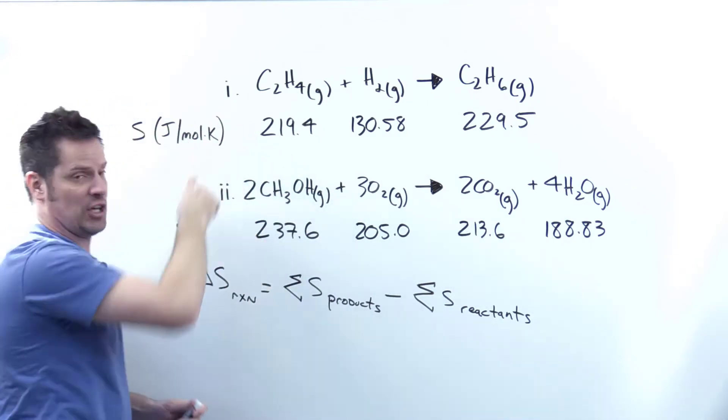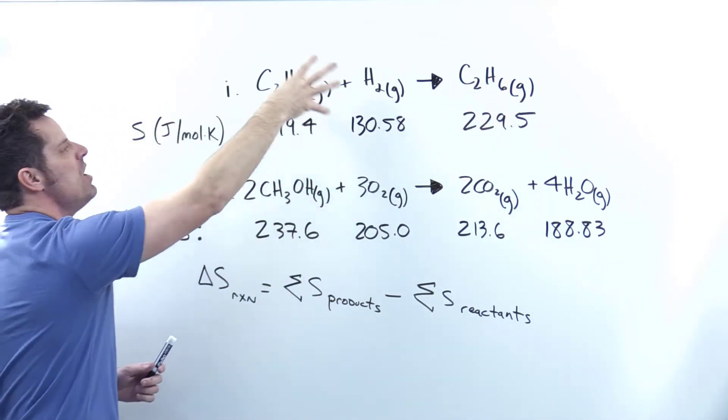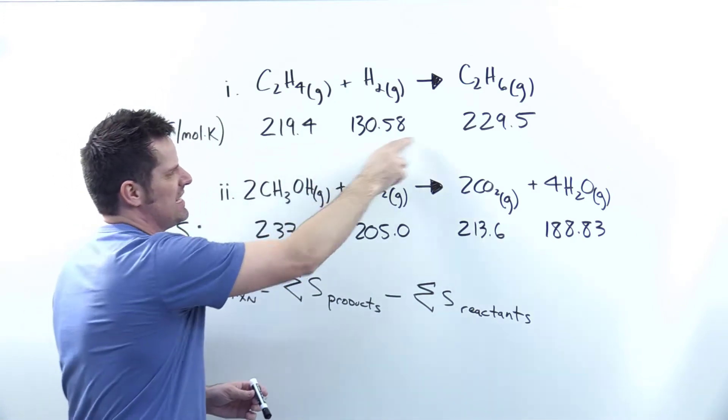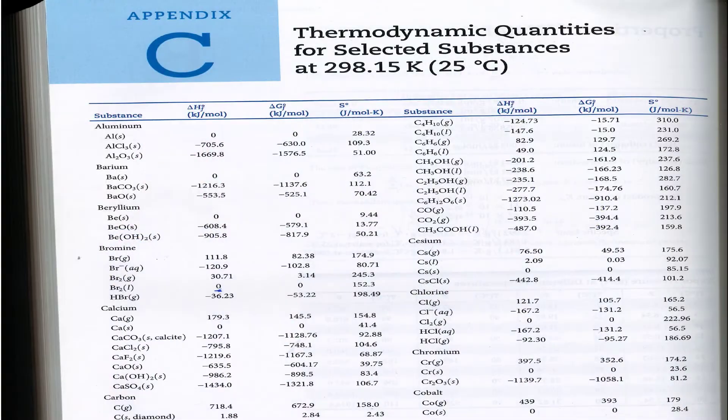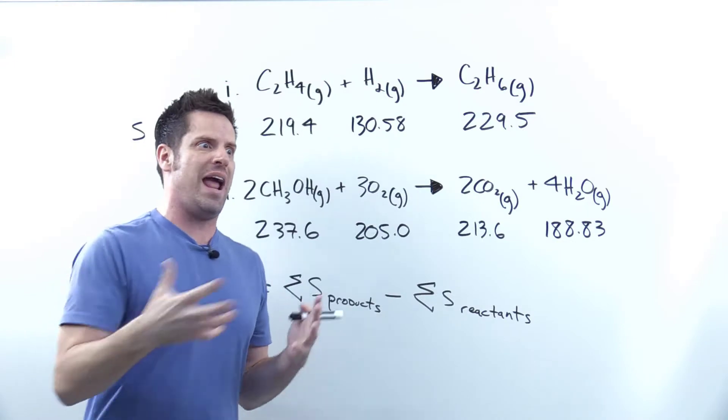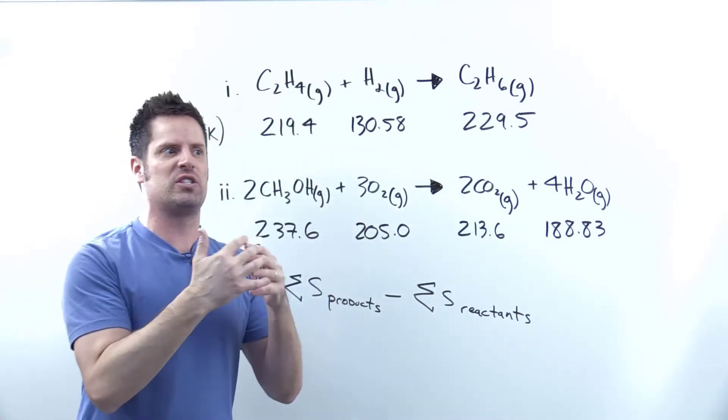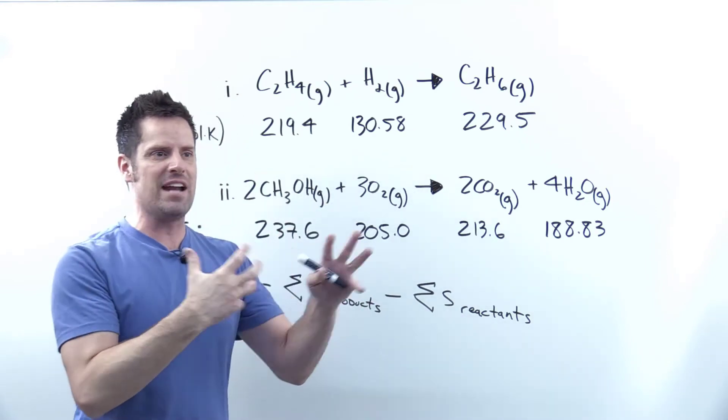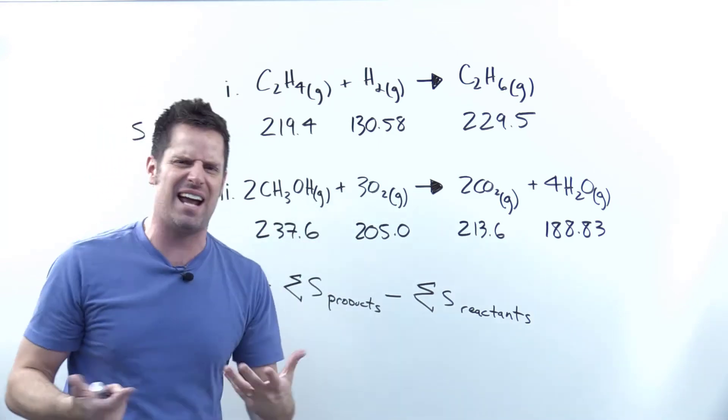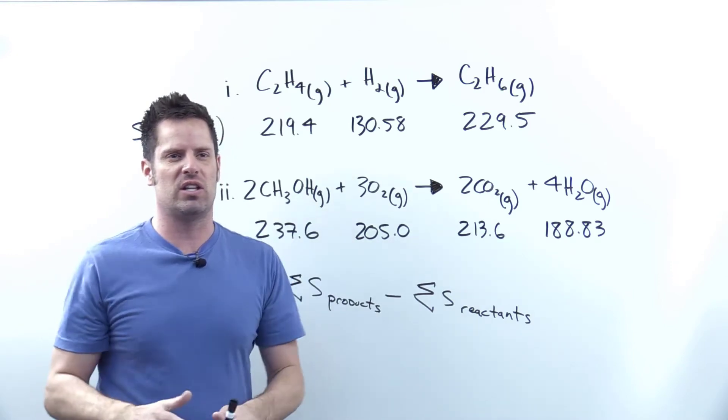For this first reaction, I'm going to take all the S values for the products and subtract the sum of those for the reactants. I'll do the same thing with reaction II. Where did I get these values? I got it from appendix C at the end of the text that I recommend for my students. For anyone watching this who doesn't have that, you can probably just look up online thermodynamic table or entropy data table, or access a similar table from any general chemistry textbook.